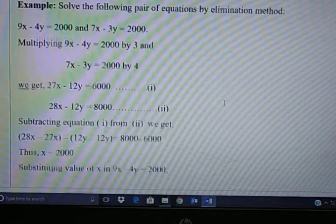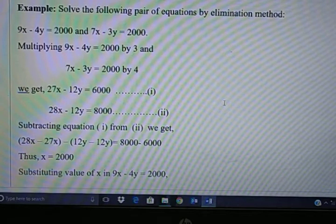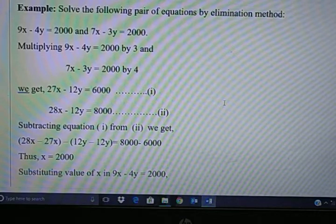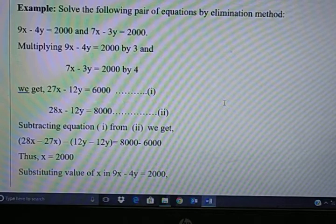For example, I have taken two equations: 9x minus 4y equals 2000 and 7x minus 3y equals 2000. This is the pair of equations.